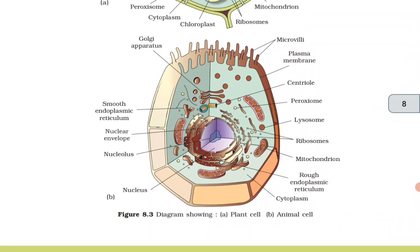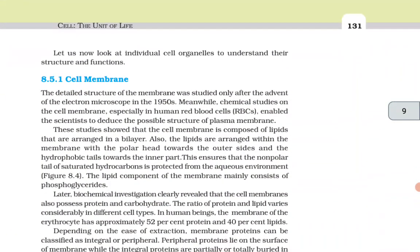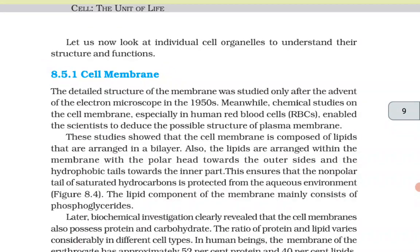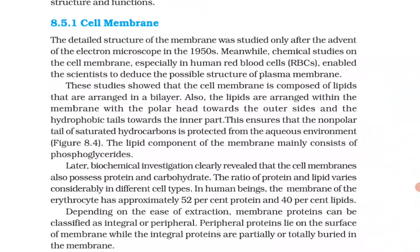Cell membrane: the detailed structure of the membrane was studied after the advent of the electron microscope in the 1950s. Chemical studies on the cell membrane, especially in human red blood cells (RBCs), enabled scientists to deduce the possible structure of plasma membrane. These studies showed that the cell membrane is composed of lipids arranged in a bilayer, with the polar head towards the outer side and the hydrophobic tails towards the inner part.